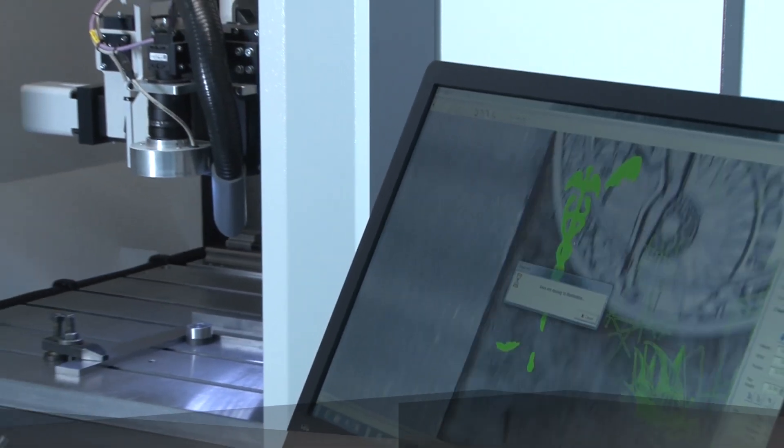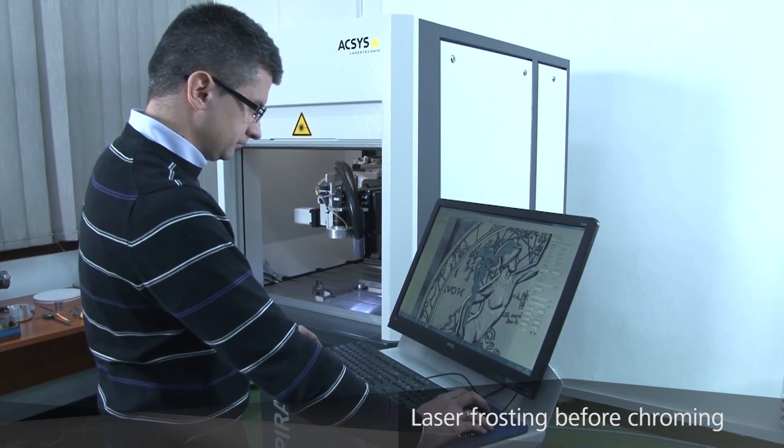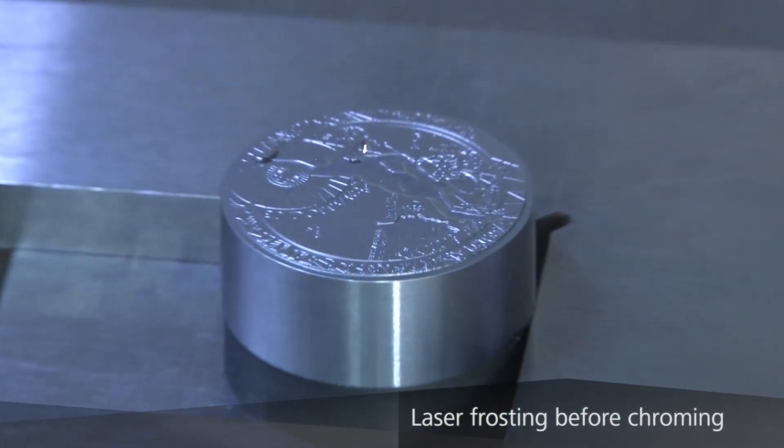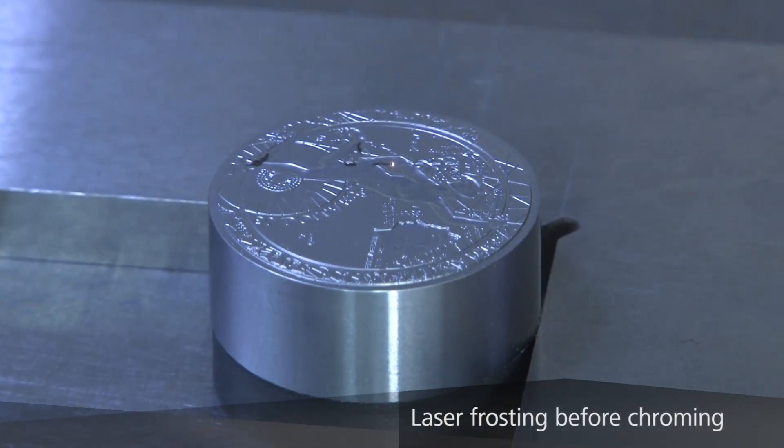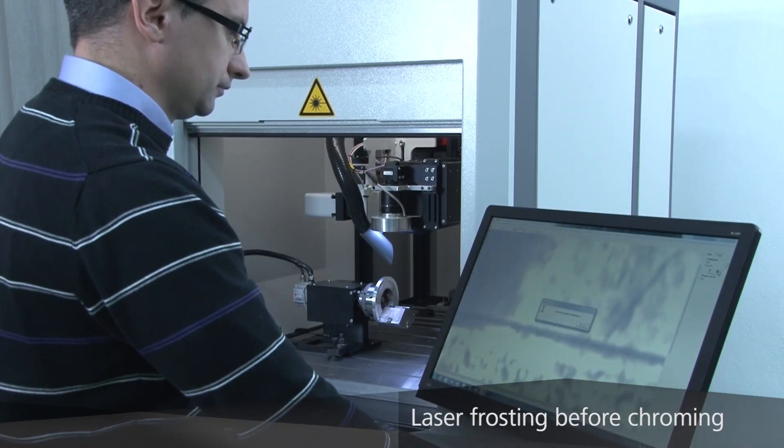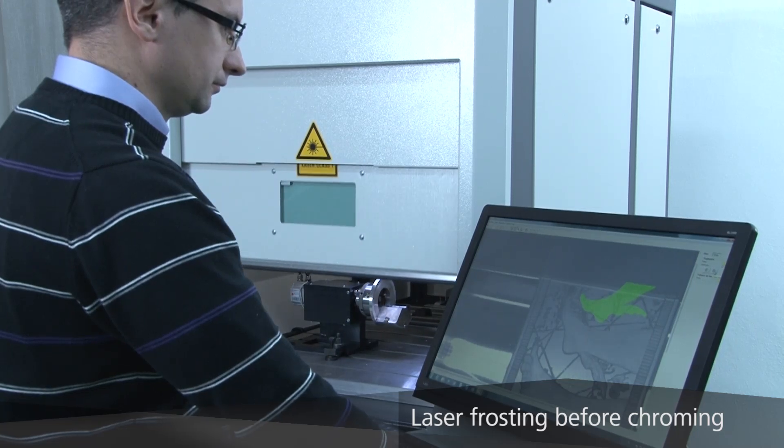The next step is the surface structuring and frosting of the dies using the laser once again. Areas are either imported or created directly in the laser system. The exact positioning of the frosting areas are ensured by a high-precision camera system that shows a live picture of the die in full on the screen.